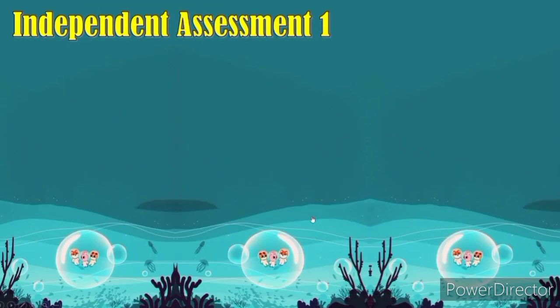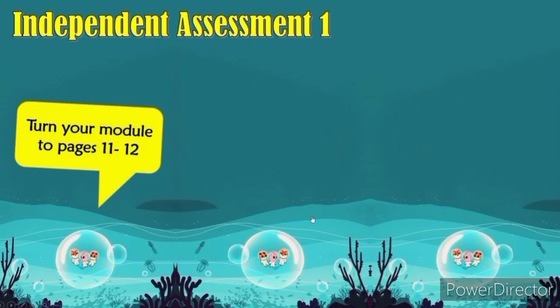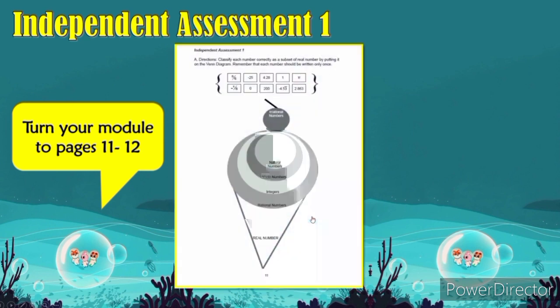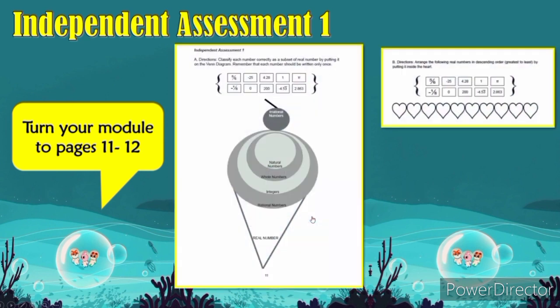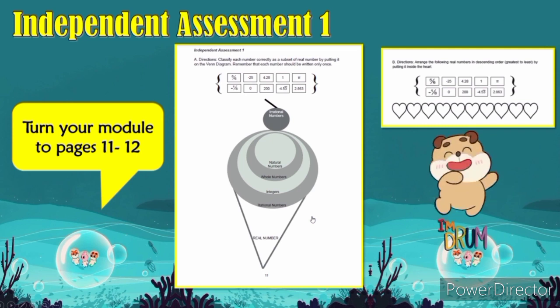Independent assessment number 1. Now turn your module to pages 11 and 12. Classify each number correctly as a subset of real numbers by putting it on the Venn diagram. Remember that each number should be written only once. For letter B, arrange the following real numbers in descending order or greatest to least by putting it inside the heart.